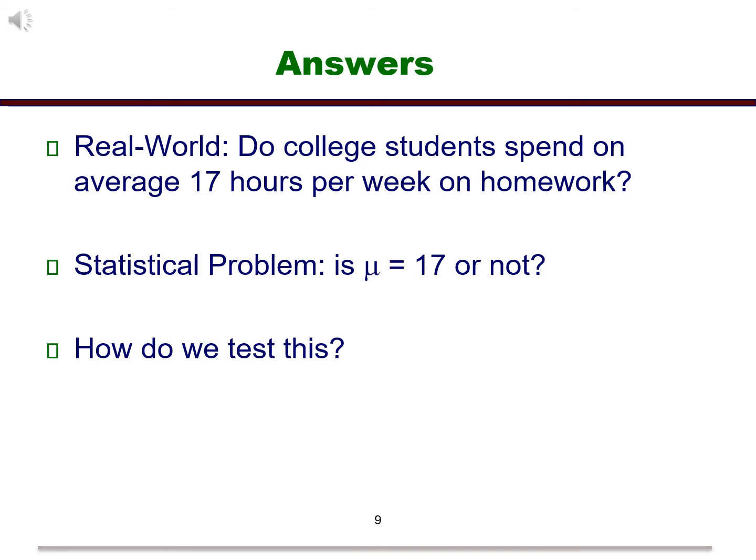Now we translate this to the statistical world. Since we are talking about the number of hours on average, our parameter in question is the mean. We would like to test to see if the mean is 17, so our assumption becomes mu equal to 17. So now, the question becomes, how do we test this assumption?